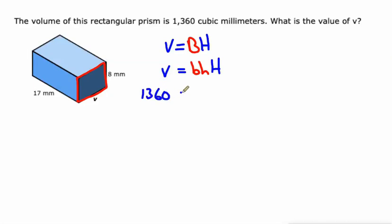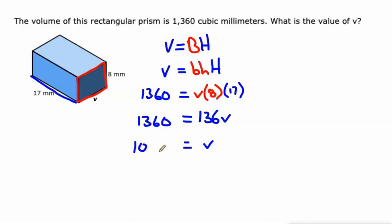1360 is our volume. Our base will call V base of our base, if that makes sense. Our height of our base will call eight. And the height of our prism is this distance right here, which we'll call 17. Let's simplify the right side a little bit. We can just do eight times 17, which is 136. So 136 V on the right. And then we'll just divide both sides by 136. So 1360 divided by 136 is 10, as in 10 millimeters is that missing dimension.